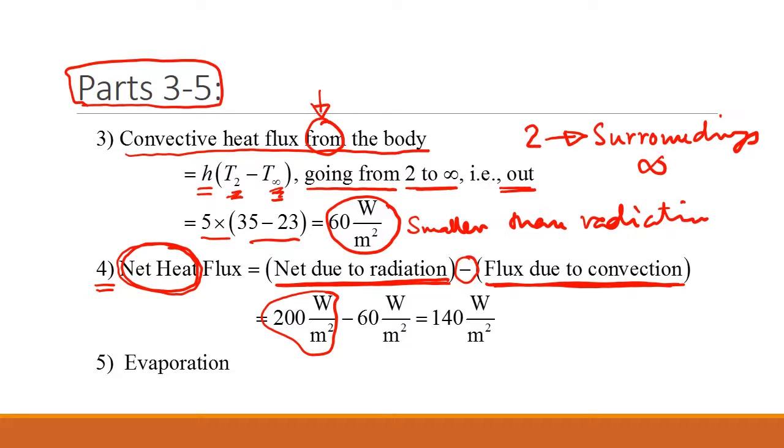If I subtract that, why am I subtracting it? Because the 200 watts per meter square is into the infant. Whereas this 60 watts per meter square is away from the infant because it says 2 to surrounding. If I subtract them, I get 140 watts per meter square.